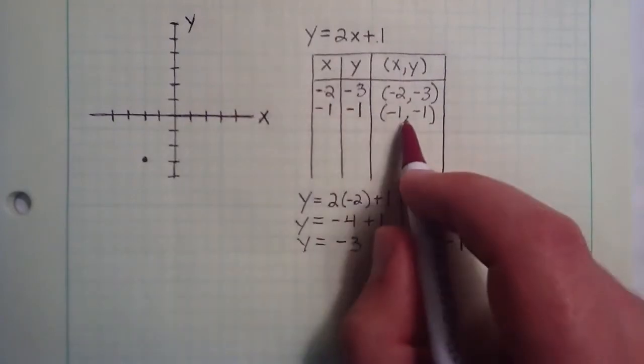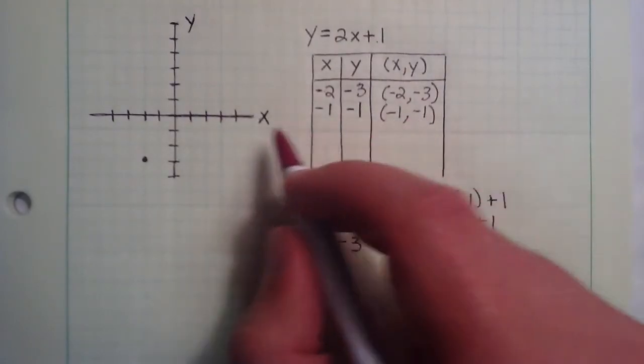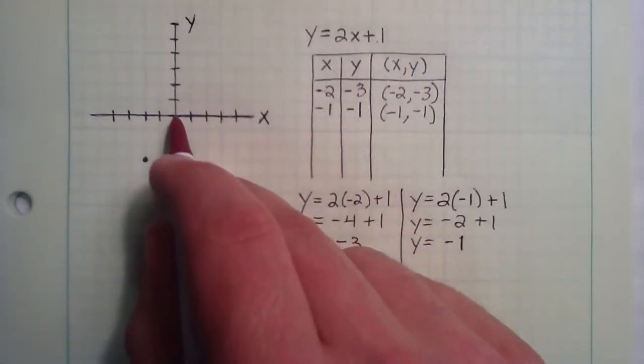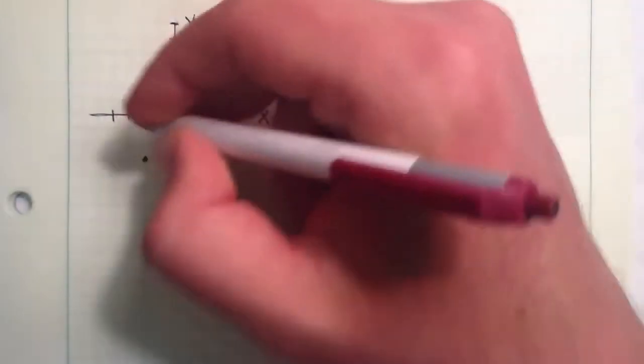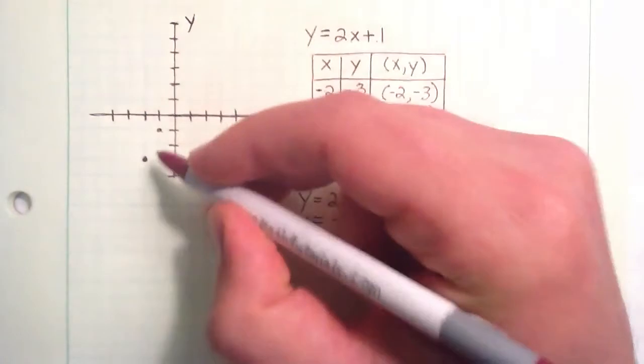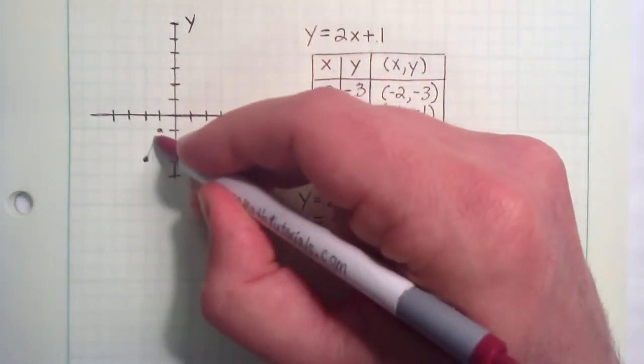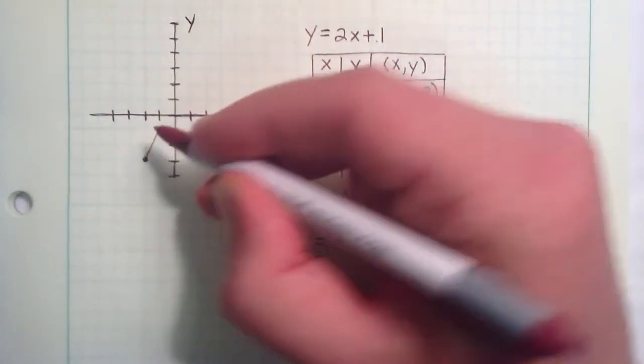Going back to our graph, plotting the point negative 1, negative 1. Starting at the origin, negative 1 in the x direction. Negative 1 in the y direction gives us the point right here. And connecting these two dots gives us the first part of our line.